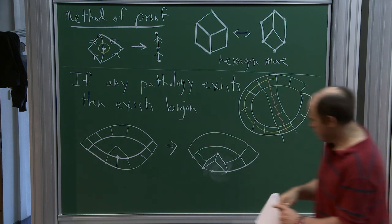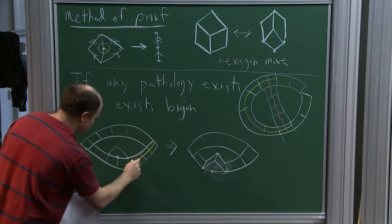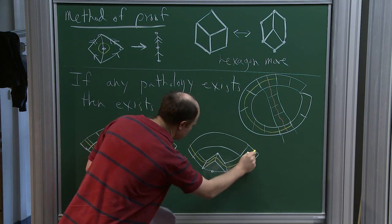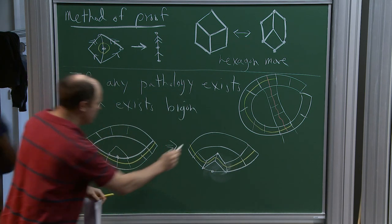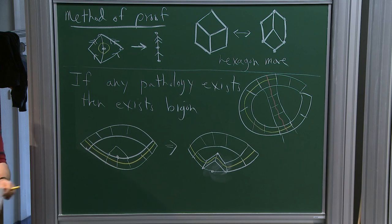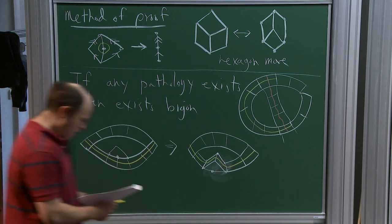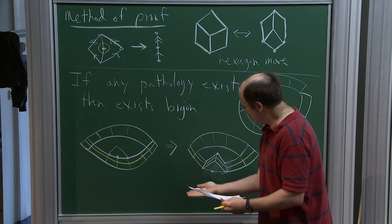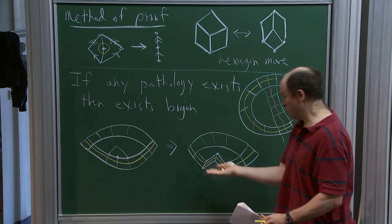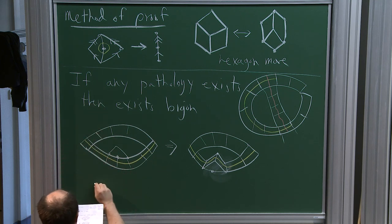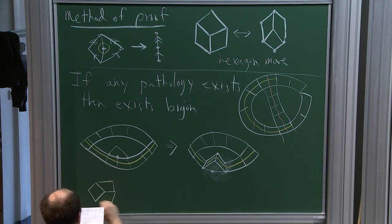The yellow dual curve that was over here got replaced by that yellow dual curve over there. What happened is we've now found a new disk diagram with a smaller bigon. You keep doing this until there are no bigons left to push out at the bottom or at the top.